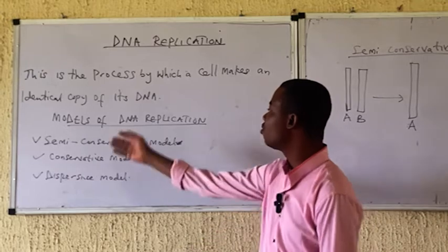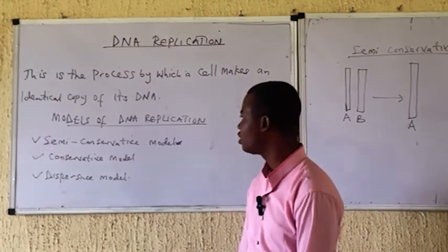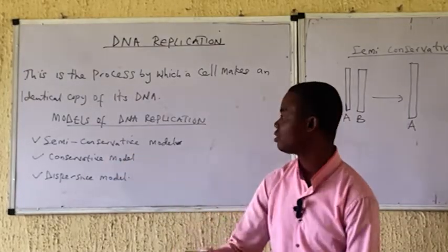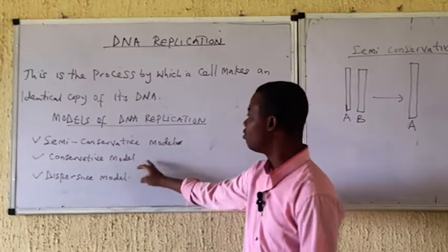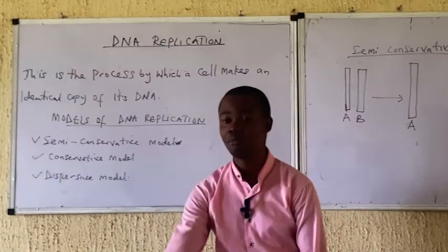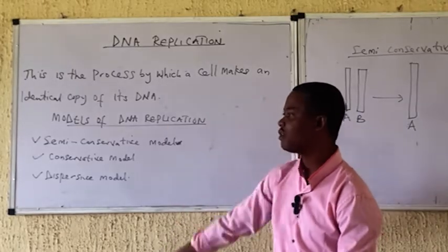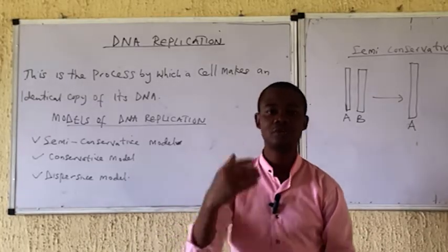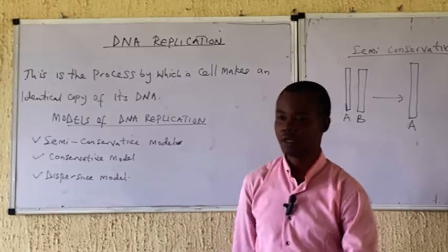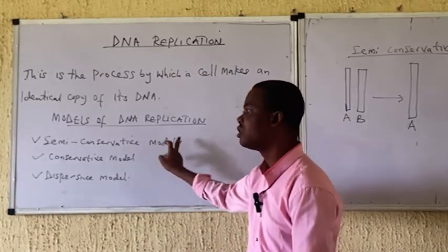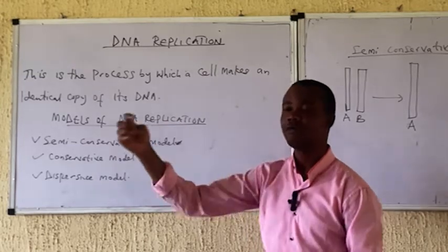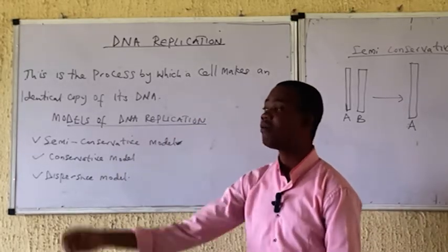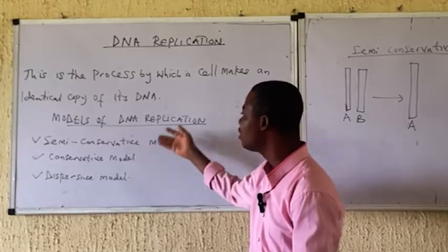We must note that we have models of DNA replication. Scientists have come out with three models: the semi-conservative model, the conservative model, and the dispersive model. However, the most acceptable model of DNA replication is the semi-conservative model, and that will be our focus in today's class.